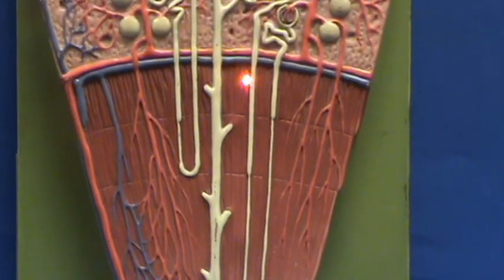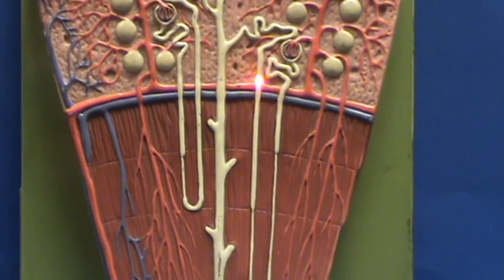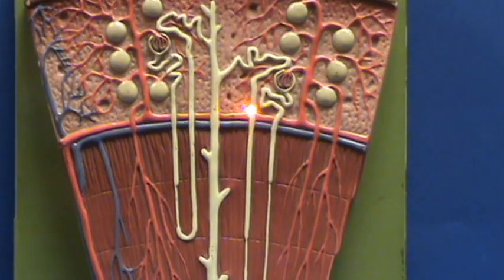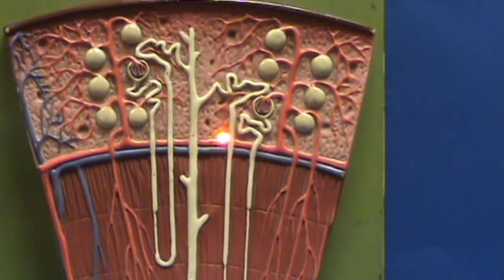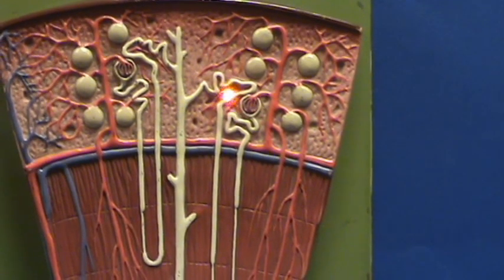But the ascending limb will again come back, and it always does the same thing, which we didn't note with the cortical nephron, but we can note with the juxtamedullary nephron.